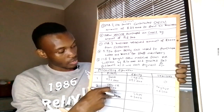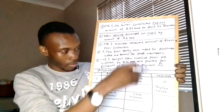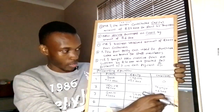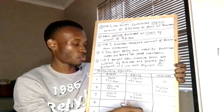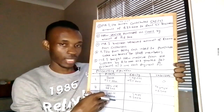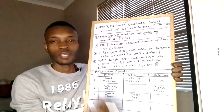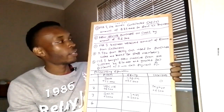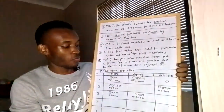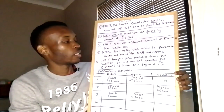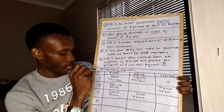Remember the principle — you have to verify that asset equals equity plus liability. When you add equity and liability they must equal the asset total. Make sure you verify that.